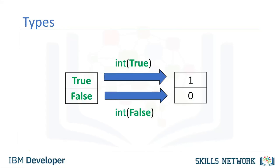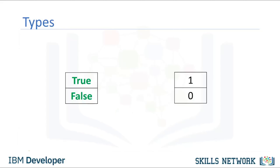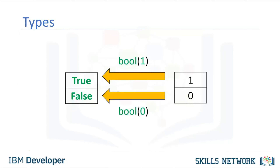If you cast a 1 to a Boolean, you get a true. Similarly, if you cast a 0 to a Boolean, you get a false. Check the labs for more examples, or check python.org for other kinds of types in Python.